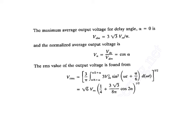For the interval pi by 6 plus alpha to pi by 2 plus alpha, when thyristors T1 and T6 are conducting, the RMS voltage is given by: Vrms = under root of 3 by pi times the integral from pi by 6 plus alpha to pi by 2 plus alpha of 3 Vm squared sin squared(omega t plus pi by 6) d(omega t). Solving this integration, Vrms = root 6 Vm times under root of one quarter plus 3 root 3 divided by 8 pi times cos alpha.